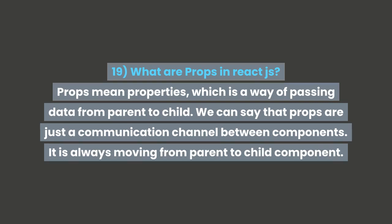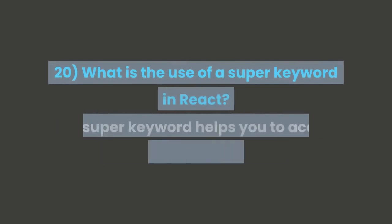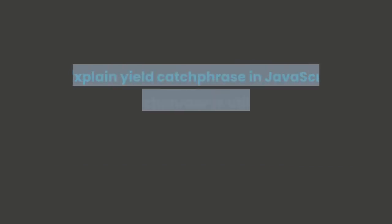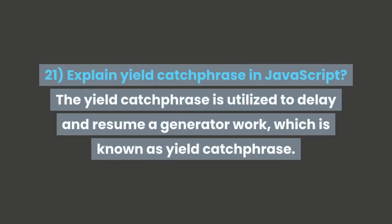Props are always moving from parent to child component. Question 20: What is the use of the super keyword in React? The super keyword helps you to access and call functions on an object's parent. Question 21: Explain the yield keyword in JavaScript. The yield keyword is used to pause and resume a generator function.